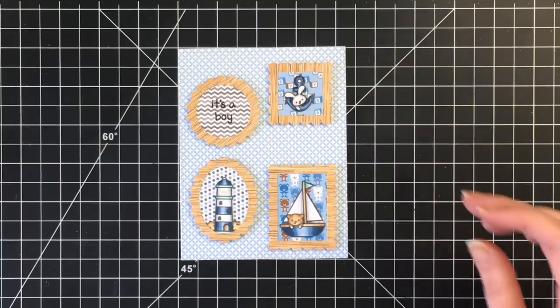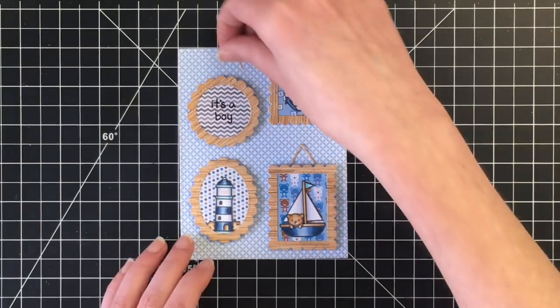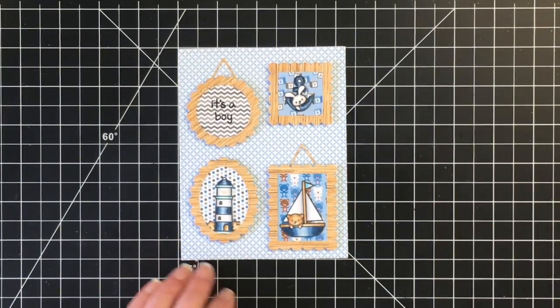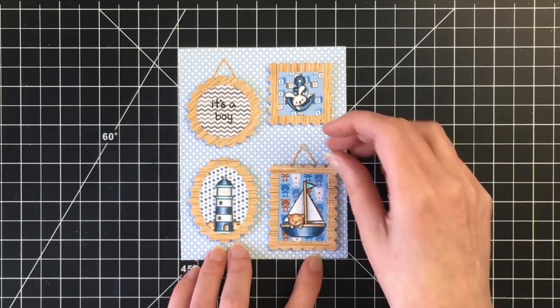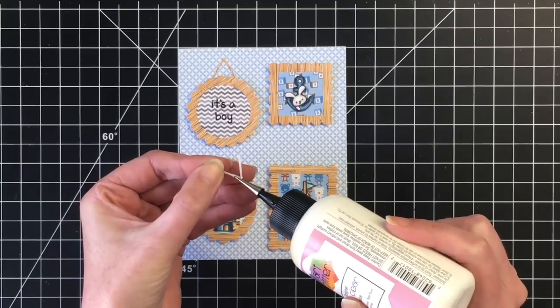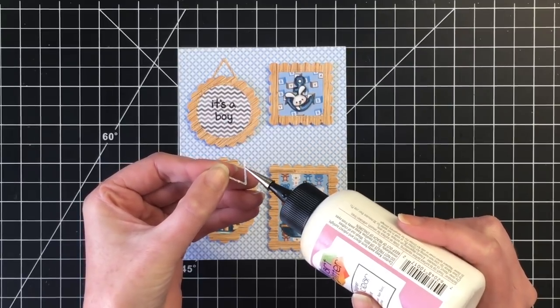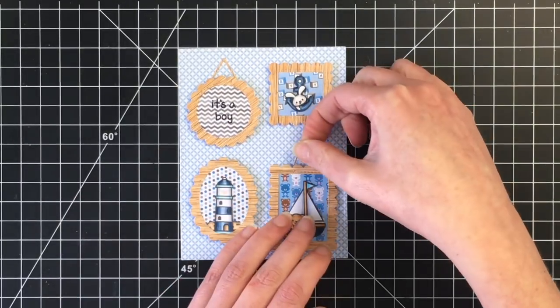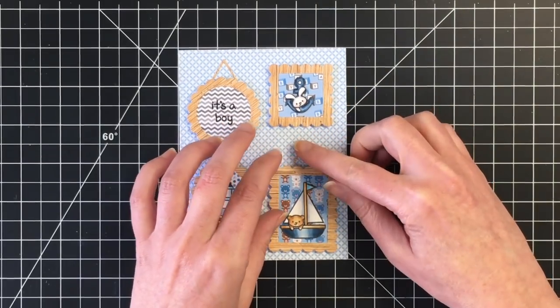Now I'm leaving that rectangular one down a little bit lower because there are these little picture hanger accessories that come in the mini picture frames die. So I'm going to add this little hanger to the rectangular picture frame as well as the circular one that has the sentiment.